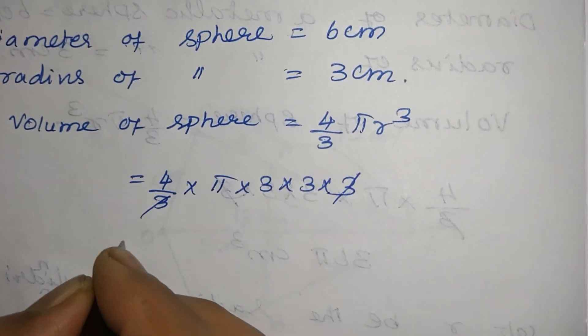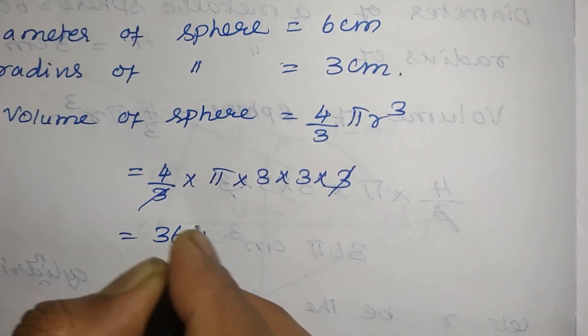3 times 3 is 9, 9, 4 times 9 is 36, 36 pi cm cube. Take it as 1.